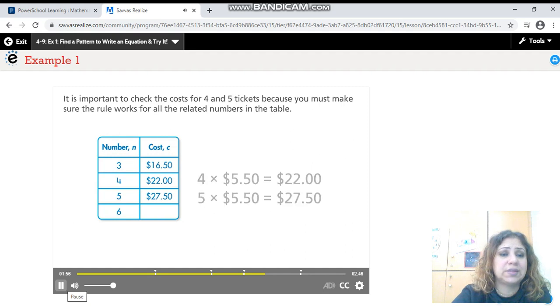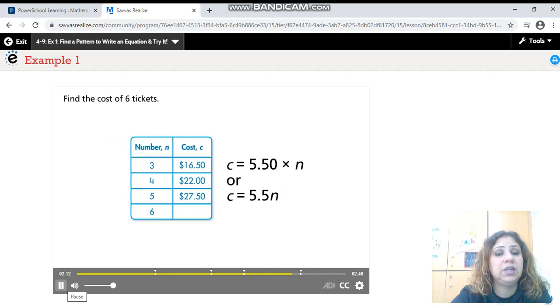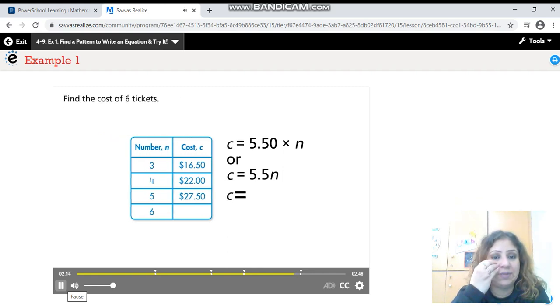So the rule was 3P equals $16.50. State the rule. The total cost C is $5.50 times the number of tickets N. Let's write the equation. C equals $5.50 times N, or C equals 5.5 times N.